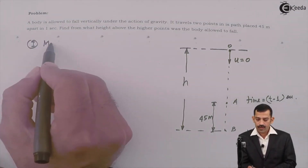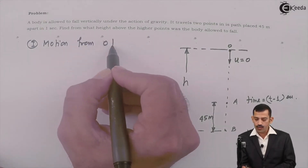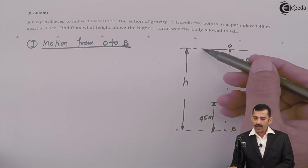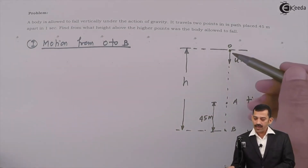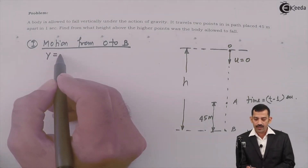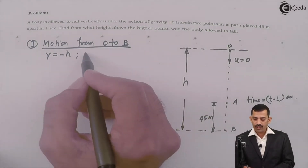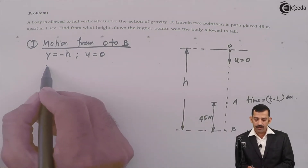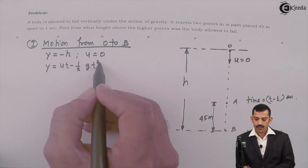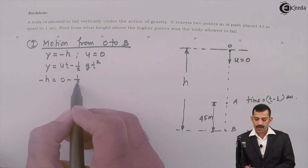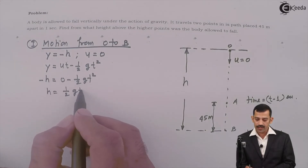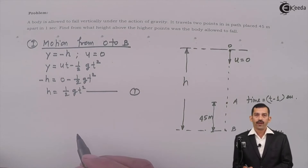First motion: from O to B. Initial velocity is 0. The displacement Y is minus H because the final position B is below the initial position O. Using the relation Y equals uT minus half gT squared, substituting Y as minus H and u as 0, we get minus H equals minus half gT squared, which gives H equals half gT squared. This is equation number 1.